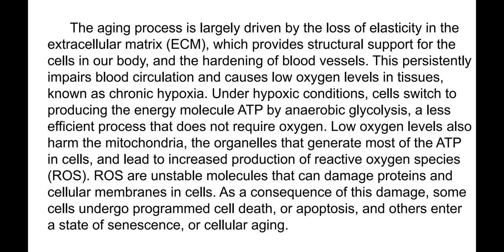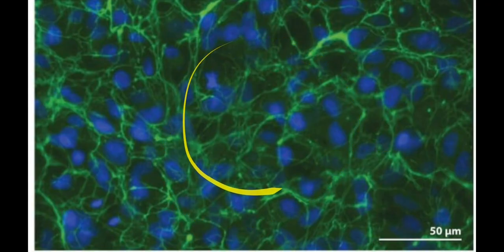Reactive oxygen species are unstable molecules that can damage proteins and cellular membranes. As a consequence, some cells undergo programmed cell death — apoptosis — while others enter a state of senescence, or cellular aging. The extracellular matrix acts like a frame to which living cells are attached. Our body largely consists of this frame with empty spaces filled by liquid — we are a colony of cells, but the frame gives our body shape and stability.